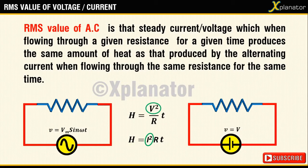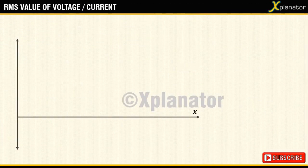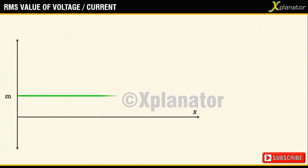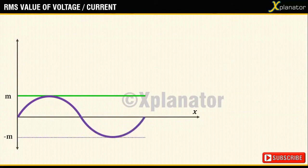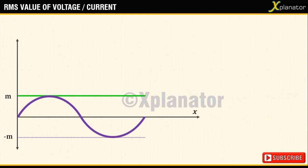So consider an XY plane and a DC signal with a magnitude m, an AC signal with a peak of same magnitude i.e. m, and let the time period under consideration be 2π.